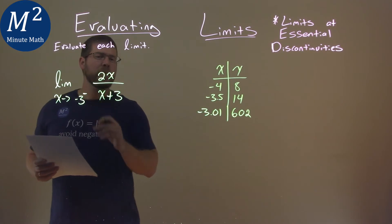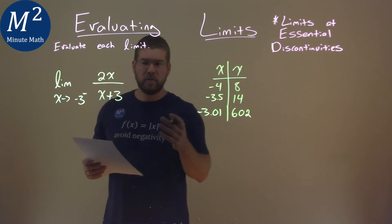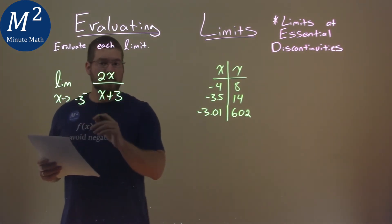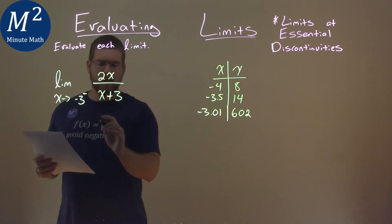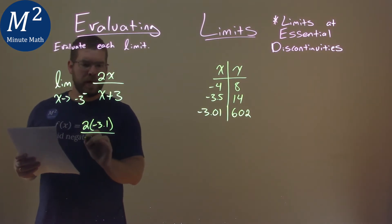So if we approach from the left, what really happens here? I like to do this little exercise. I pick a value just to the left of negative 3, negative 3.1, and plug that in for x. I have negative 3.1 plus 3.